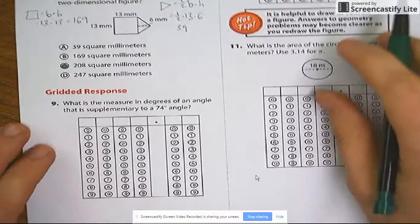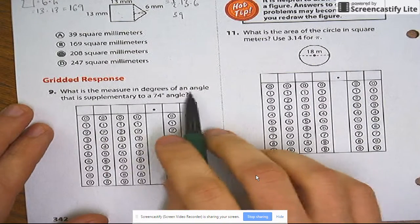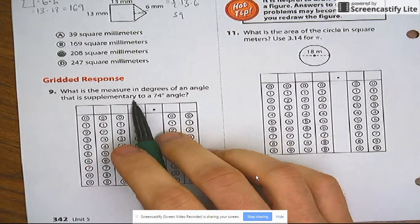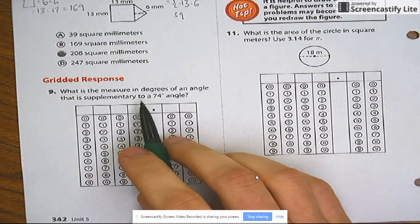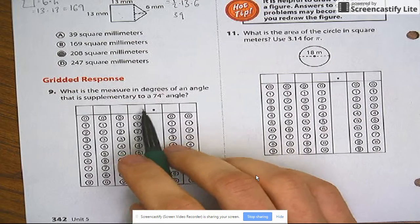We'll do one more. Number 9, gridded response. What is the measure in degrees of an angle that is supplementary to a 74 degree angle? Okay, this you just got to know. You got to remember what the word supplementary means.